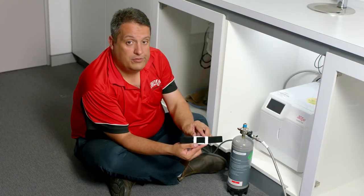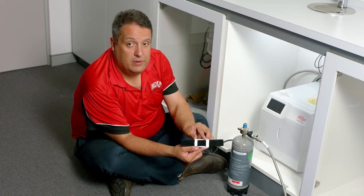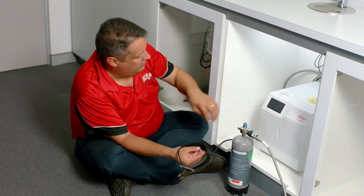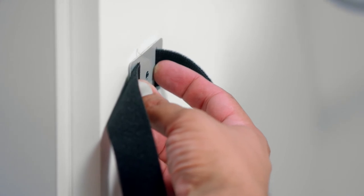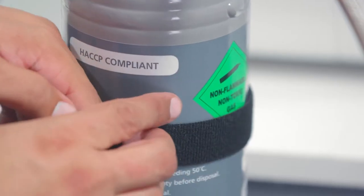A CO2 bottle strap is supplied with the unit. This needs to be mounted to the side of your cupboard so that when you fit your CO2 bottle, it will be held steadfast in the upright position.